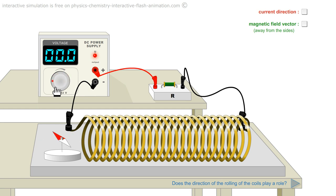Without current, it turns towards the terrestrial north. With current, it is placed on the axis of the coil.